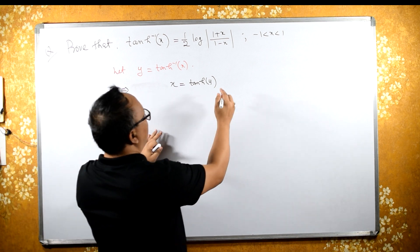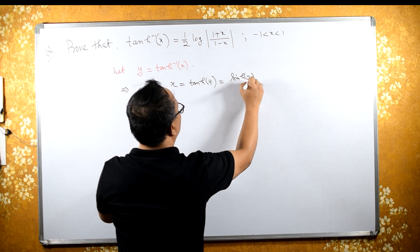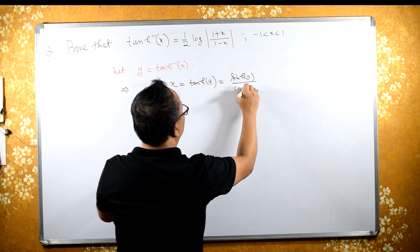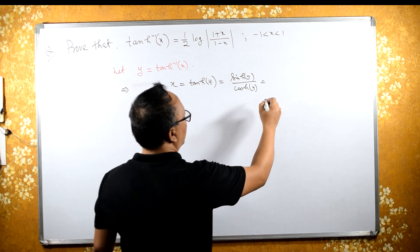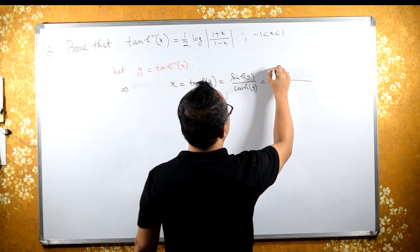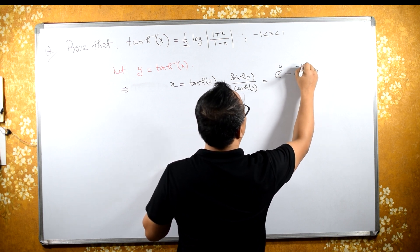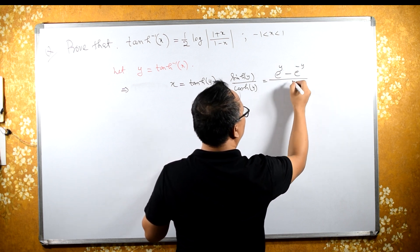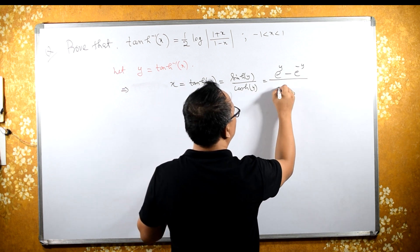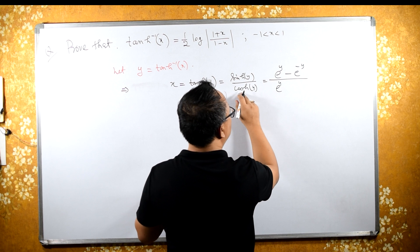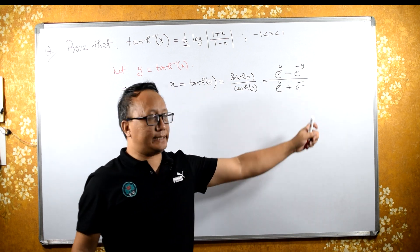What is tanh(y)? It is sinh(y) upon cosh(y). sinh(y) in terms of e is (e^y minus e^(−y)) upon 2, and cosh(y) is (e^y plus e^(−y)) upon 2. The two denominators cancel out.